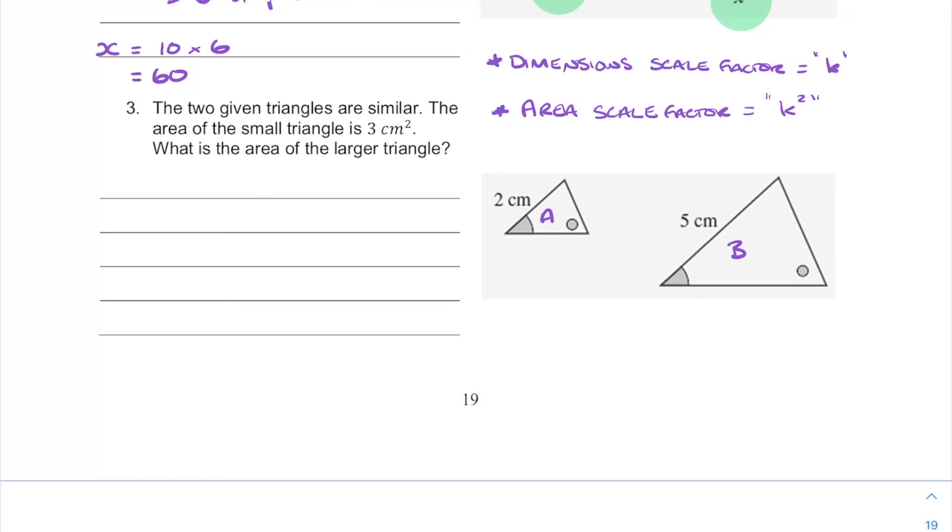So before when our scale factor was 6, if we wanted the area, we'd go 6 squared times the area, and then we'd use a third squared for the other one. Now for this one, we are given the area of the smaller triangle, which is 3 centimeters squared. So that is the area. We want to know what the area of triangle b is though. So triangle a is 3 centimeters squared, we want to know triangle b.